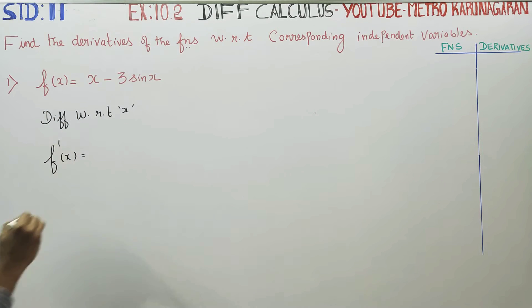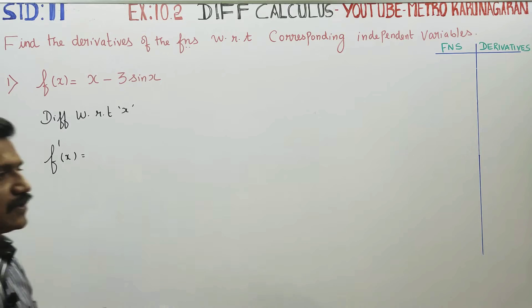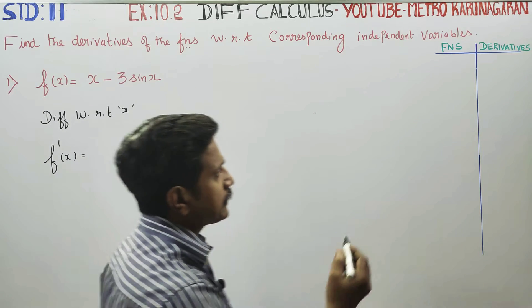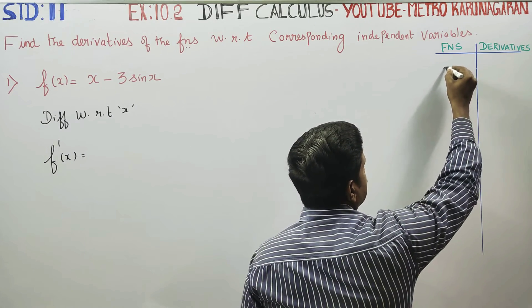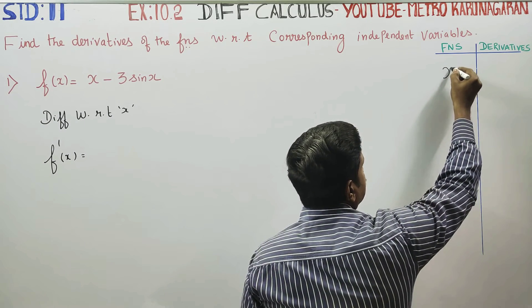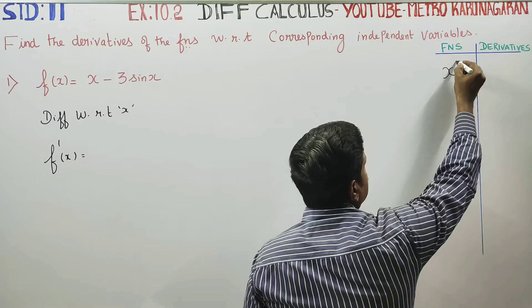So, X is the differentiation of the function. If X is the number, X is the number.